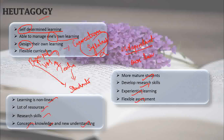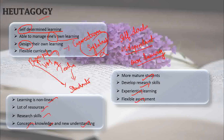To summarize: Andragogy is adult learning, and Heutagogy is self-determined learning — not self-directed, but self-determined. In Heutagogy, the teacher is still involved but only as a guide or facilitator.